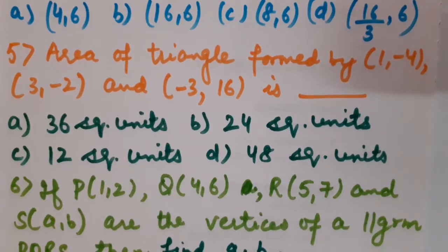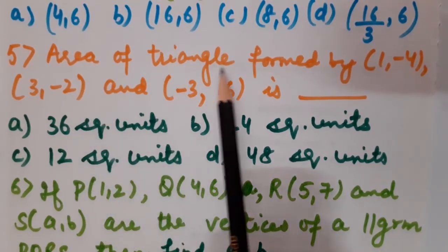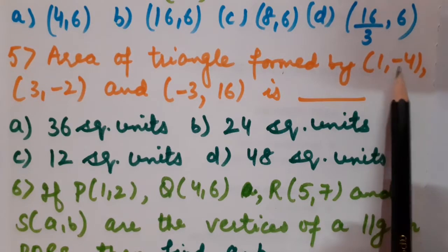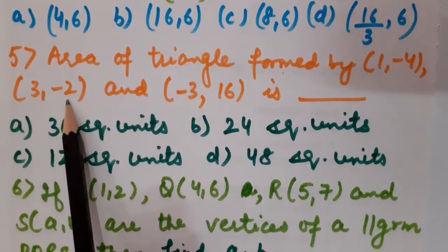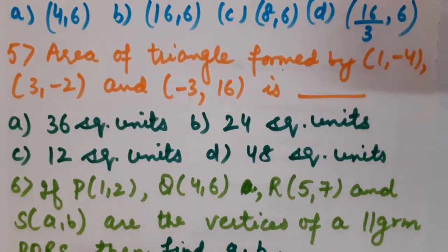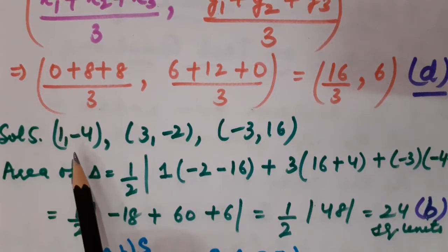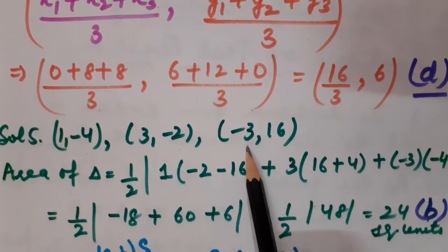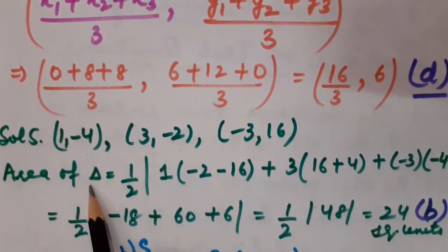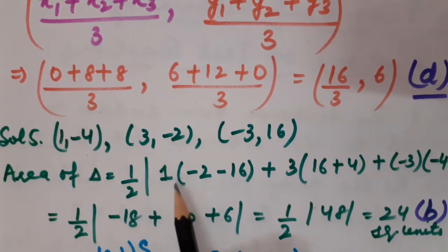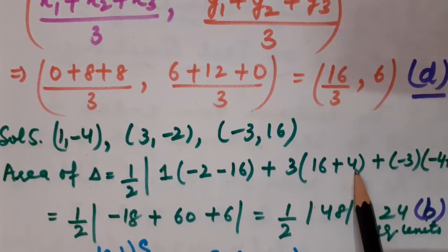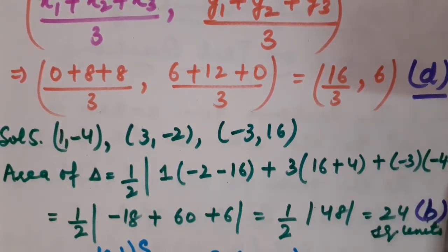Question number 5: find the area of the triangle formed by the vertices (1,−4), (3,−2) and (−3,16). We calculate the area of the triangle. The given coordinates are (1,−4), (3,−2) and (−3,16). The formula is: half × |x₁(y₂−y₃) + x₂(y₃−y₁) + x₃(y₁−y₂)|. We apply this formula here.